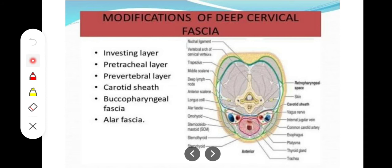In this video we are going to talk about the different layers of deep cervical fascia of the neck. First we remove the skin, then the superficial fascia. In the superficial fascia we have the platysma muscle, and after removing that we encounter the deep cervical fascia. The different layers are: the investing layer, the pre-tracheal fascia, the pre-vertebral fascia, the carotid sheath, the buccopharyngeal fascia, and the alar fascia — also called pharyngobasilar fascia.